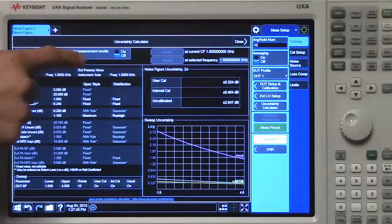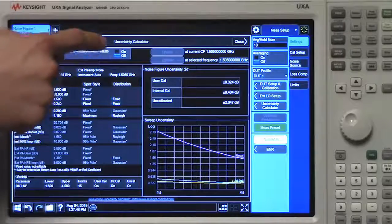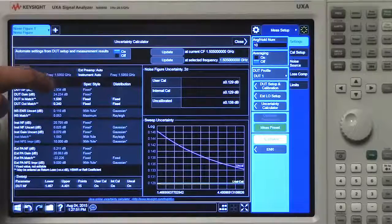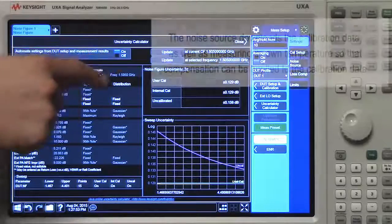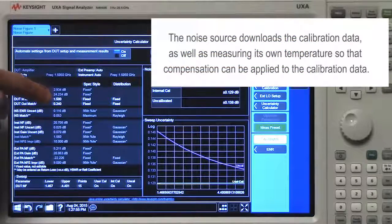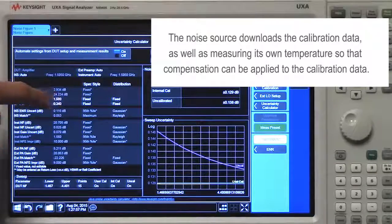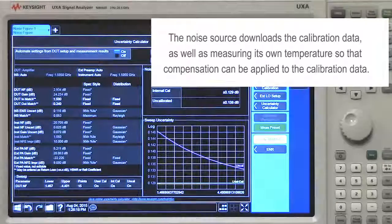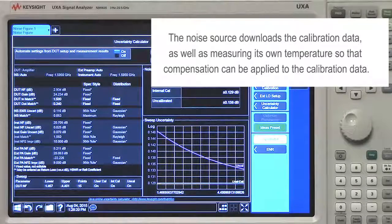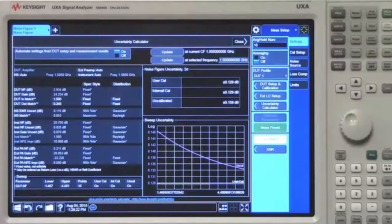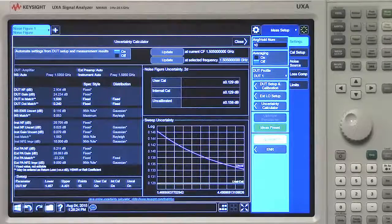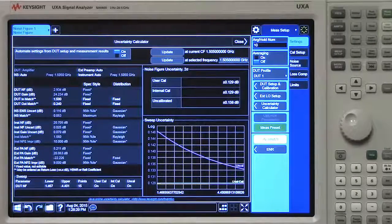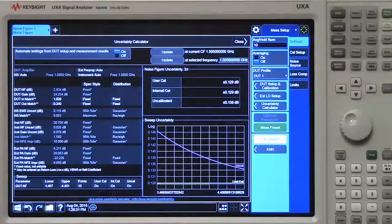At the top, I'm going to toggle the automate settings from DUT setup and measurement results button. As I toggle that, all of these fields that were manual before changed to auto and it loaded the necessary values. Our uncertainty calculator now has enough information to give a reliable total uncertainty. Notice that all we had to do was connect our smart devices and toggle a few buttons.